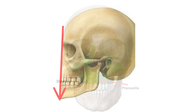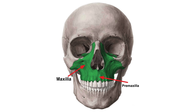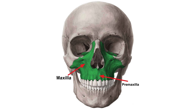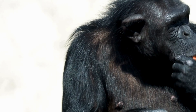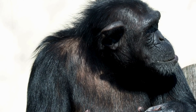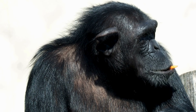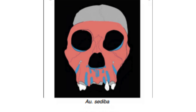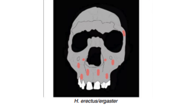The way early hominin faces developed involved independent changes in the upper jaw — the maxillary — and the front part of the upper jaw called the premaxillary. The amount the face sticks out, called prognathism, varies due to different growth patterns and bone changes. The evolved facial features in early hominins happened because the base of the skull shortened and the size of canine teeth reduced.